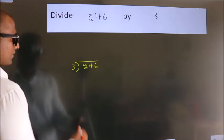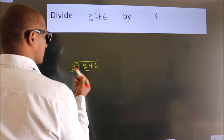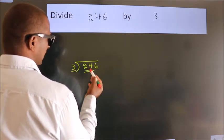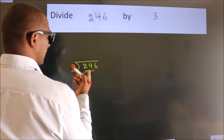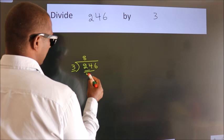Next, here we have 2, here 3. 2 is smaller than 3, so we should take 2 numbers: 24. When do we get 24 in the 3 table? 3 times 8 is 24.